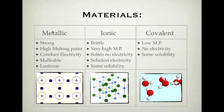So metallic bonds — you need to be able to explain what the forces are within the metallic bonding structure and how it relates to these properties. Remember that the forces involve your positive cation and the delocalised electrons, shown as little circles. All of these can be used to explain the properties.